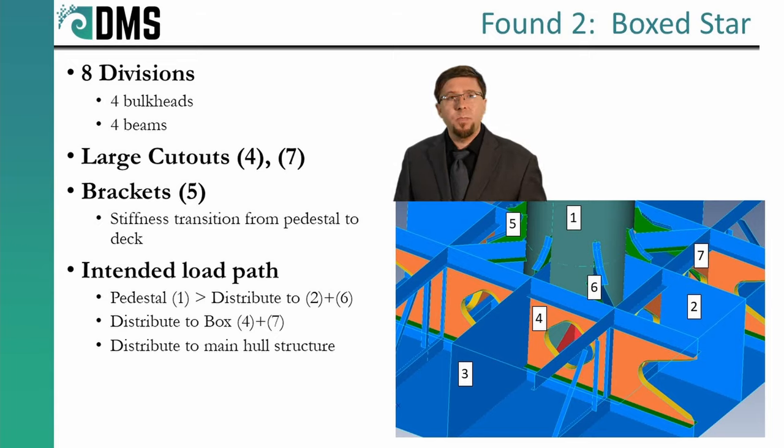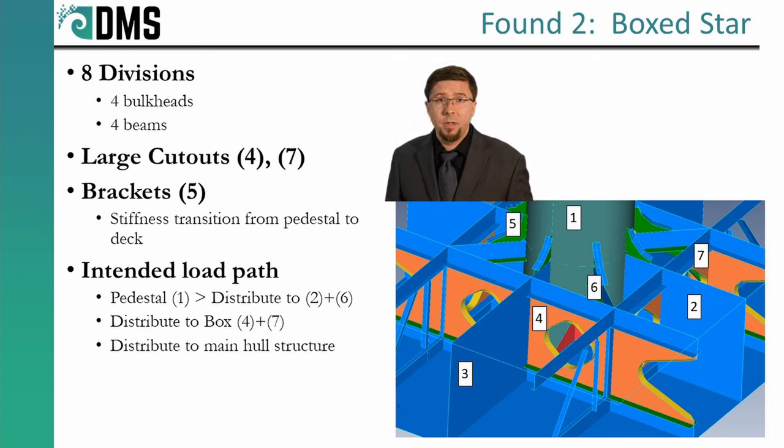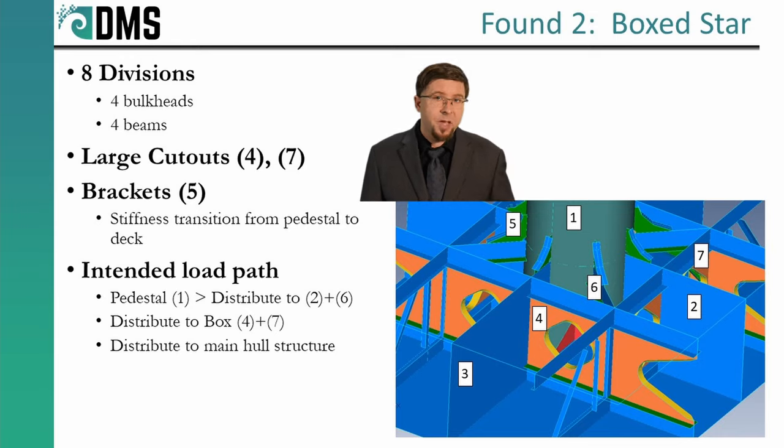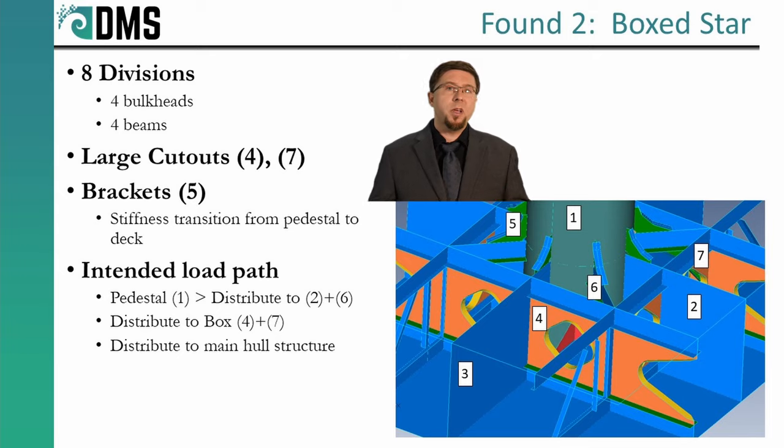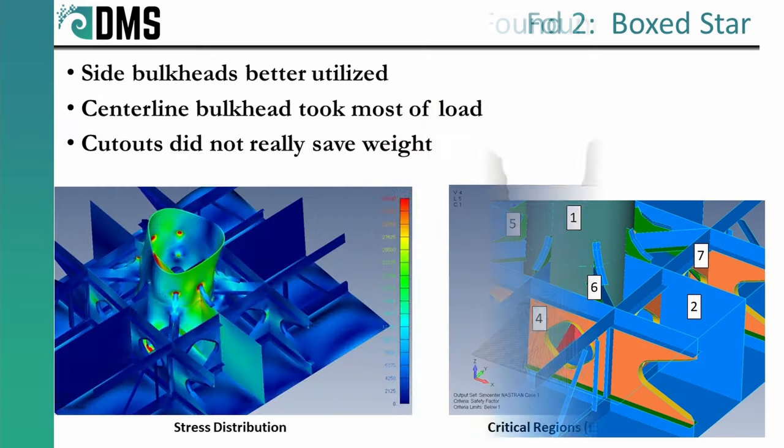But if you see, it's not a simple box. The geometry also tried to reduce weight. Foundation one showed little stresses in the side bulkheads. So, to reduce the weight, we're putting large cutouts in these bulkheads, with reinforcing beams at the top and the bottom, where most of the action is happening. We also addressed the stress spikes at the main deck, by adding brackets above the deck. Brackets create a transition between the flexibility of the pedestal and the sudden stiffness of the main deck. Transitions are a key element to reduce stress spikes.